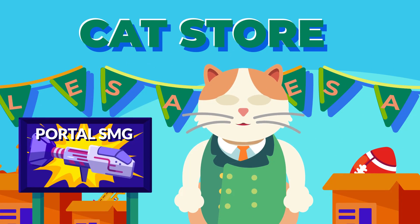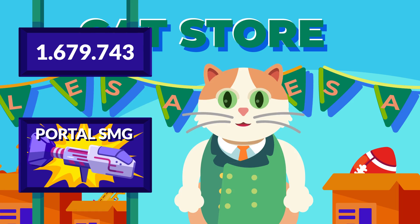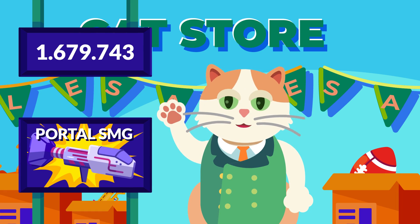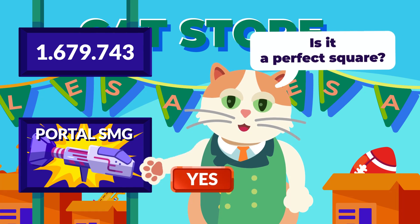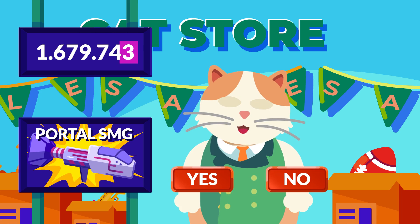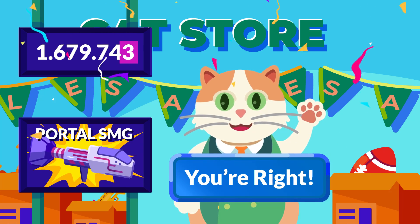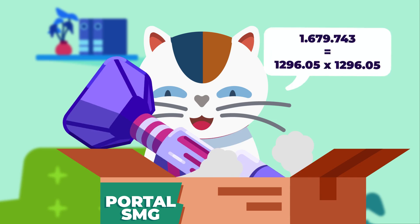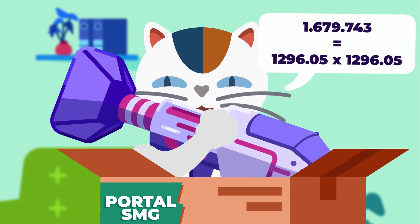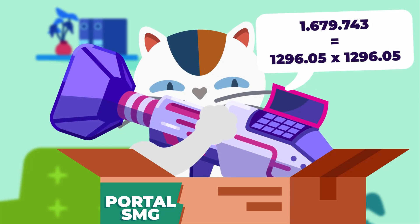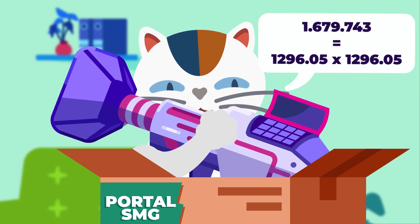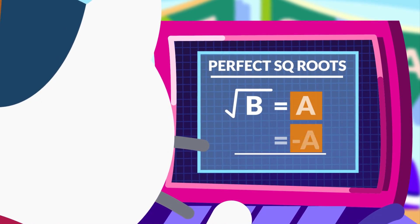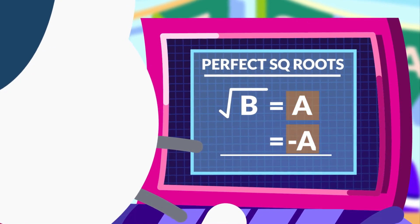For instance, consider the number 1,679,743. Since it ends with a 3, it's not a perfect square, which means no two integers of equal value will ever give the product as 1,679,743.